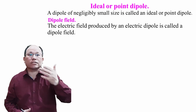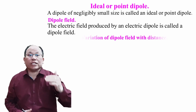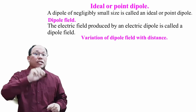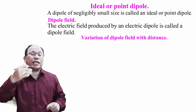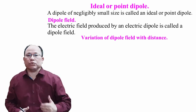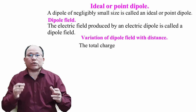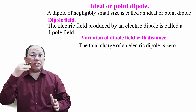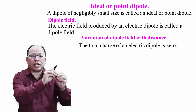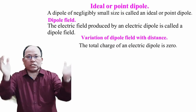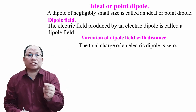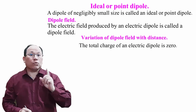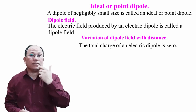Let us come to the variation of dipole field with distance. The total charge on an electric dipole is zero: −q + q = 0. So what is the total charge on the dipole? It is zero.